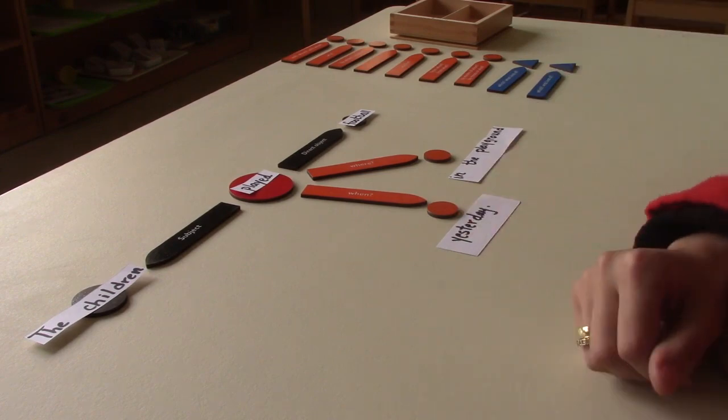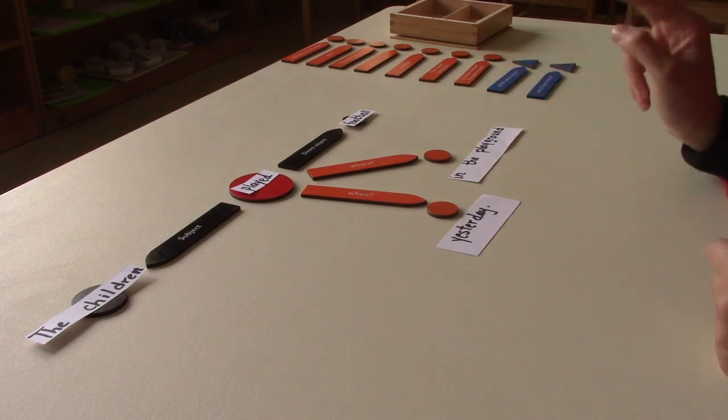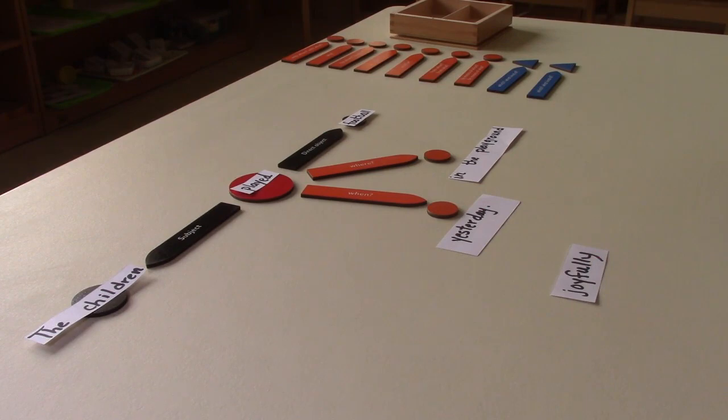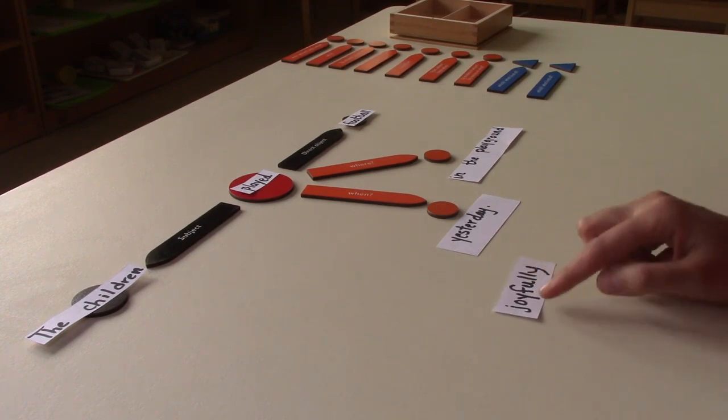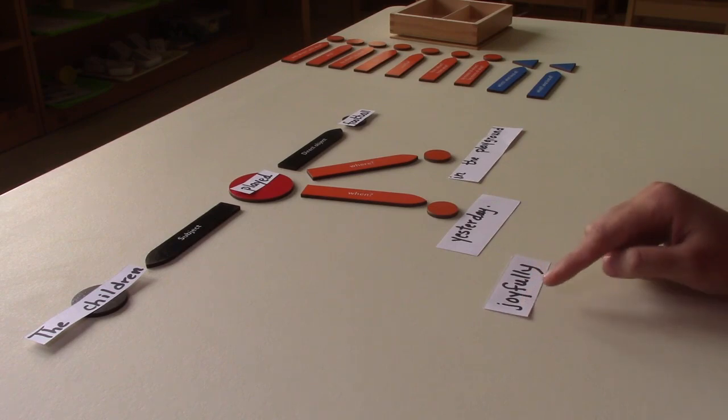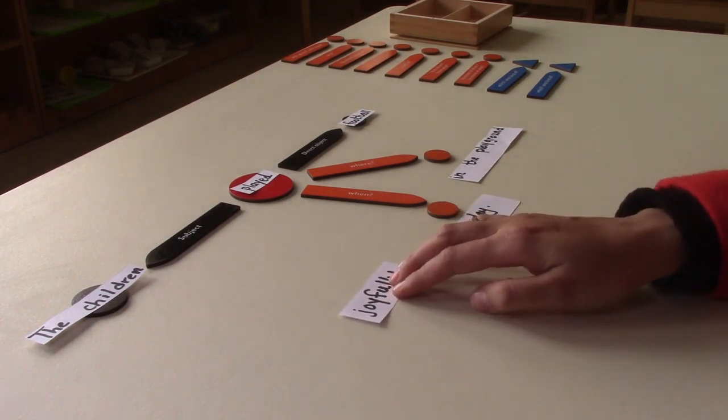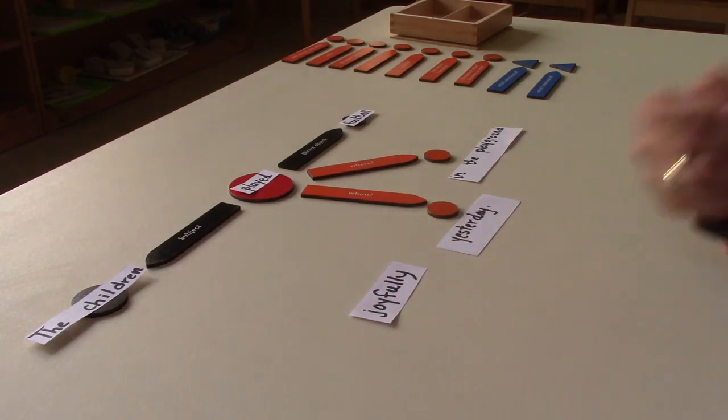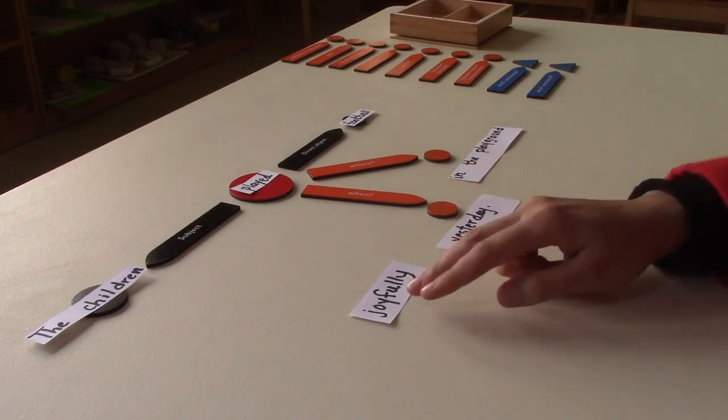Back to our sentence: The children played football in the playground yesterday. How do you think they felt when they were playing football? I mean, how did they play? The children played joyfully. So you can extend your sentence with the child. You can ask the child, how do you think they played? How did they feel? Joyfully.